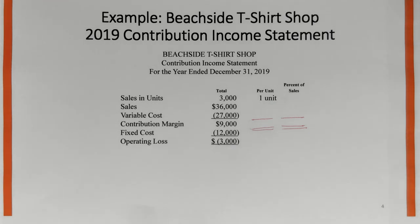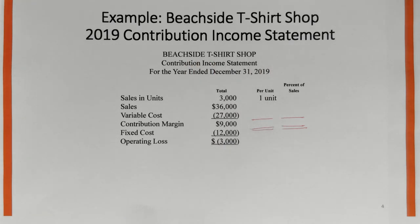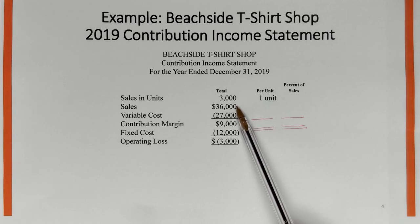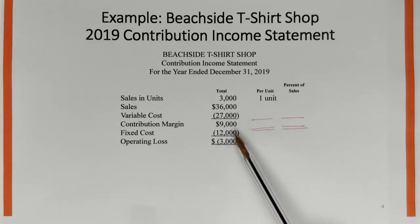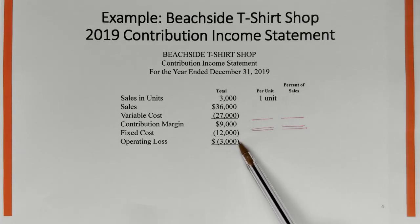Here's the example we're going to use as we go through the calculation. It's for a small company — a beachside t-shirt shop. They have unit sales of 3,000 units, sales of $36,000, variable cost of $27,000, resulting in a contribution margin of $9,000. Less fixed cost of $12,000 provides an operating loss of $3,000.